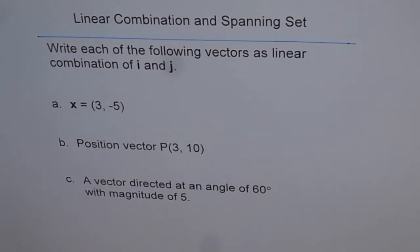Part A is x equals 3, minus 5. B, position vector P, 3, 10. And C is a vector directed at an angle of 60 degrees with magnitude of 5.